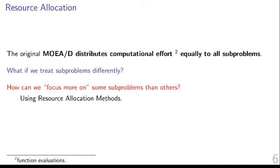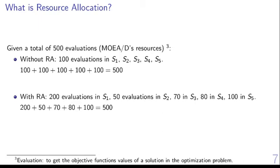To solve this issue, we use resource allocation techniques. Imagine that we have 500 evaluations to use in MOEA/D. Without resource allocation, each subproblem gets 100 evaluations each. On the other hand, when using resource allocation techniques, each subproblem receives a different amount of evaluations. For example, subproblem 1 gets 200 evaluations, subproblem 2 gets 50, subproblem 3 gets 70, subproblem 4 gets 80, and subproblem 5 gets 100. In total, we still give 500 evaluations to all subproblems, but the distribution is completely different.